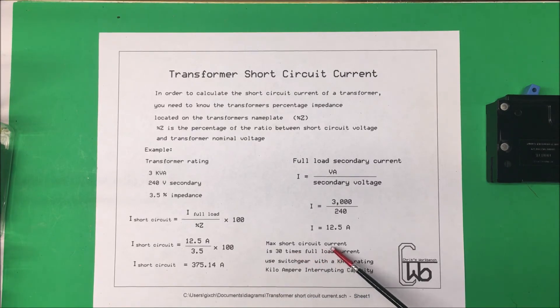So the max short circuit current is about 30 times the full load current. The switch gear has to be rated with a KAIC rating, that's kilo amperage interrupting capacity, able to take this 375 amps.